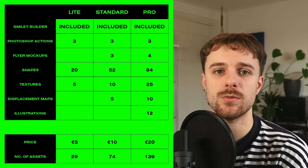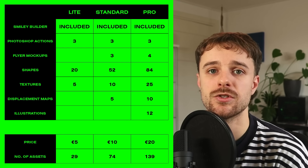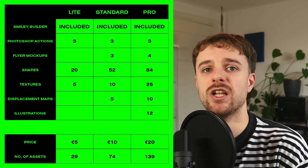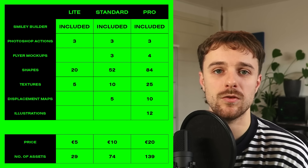The price of the Pro version is 20 bucks and it comes with 139 assets. All of the versions — including the Light and Standard versions — have the Smiley Builder inside, and the Smiley Builder lets you build over 1,000 different smileys. So if you add those up, you'll have over a thousand assets across all three packs starting from five euros. I also want to clarify that all of the shapes in this pack, even the Smiley Builder, are available if you don't use Photoshop. They work faster in Illustrator, but this complete pack is compatible with Photoshop and pretty much any design software, with the only exception being the Photoshop actions and the PSD mockup files.